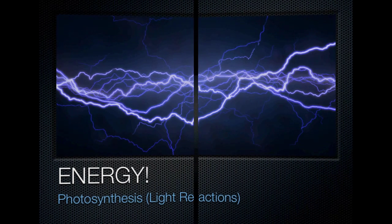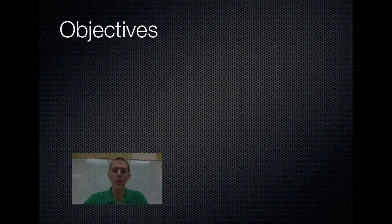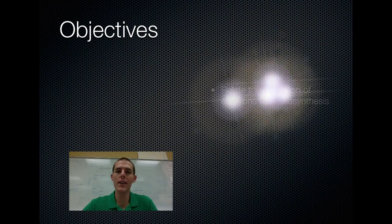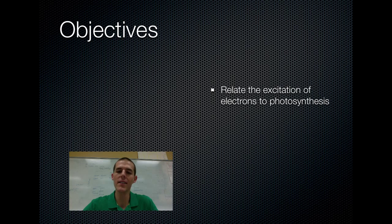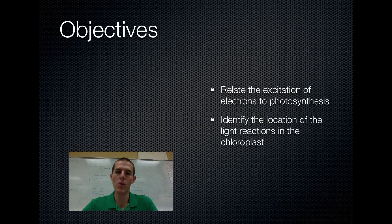So let's get on into it with our objectives, just like always. First thing I need you to be able to do by the end of this video is to relate the excitation of electrons to photosynthesis. Second thing, identify the locations of the light reactions in the chloroplast. And the final thing, describe the light reactions of photosynthesis.